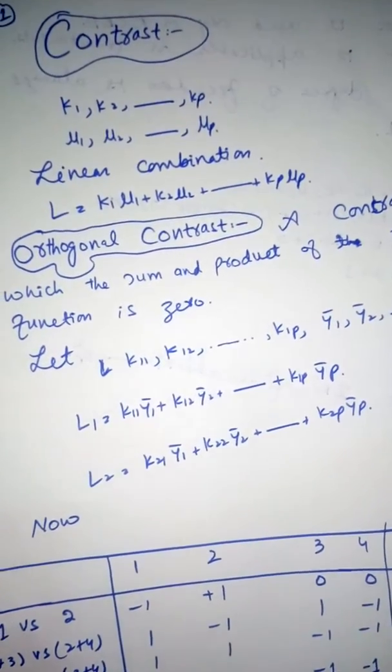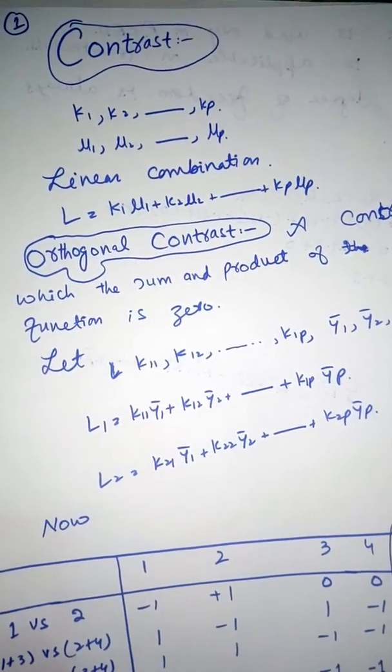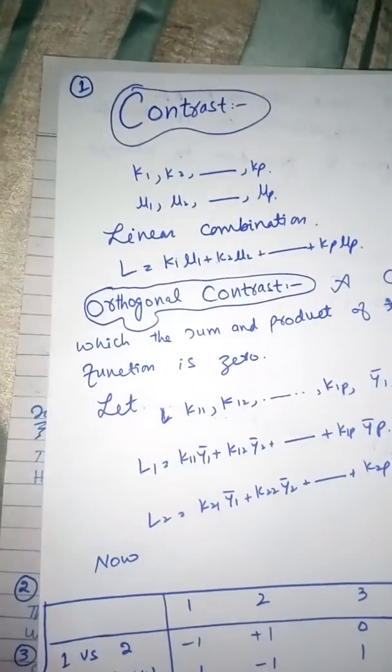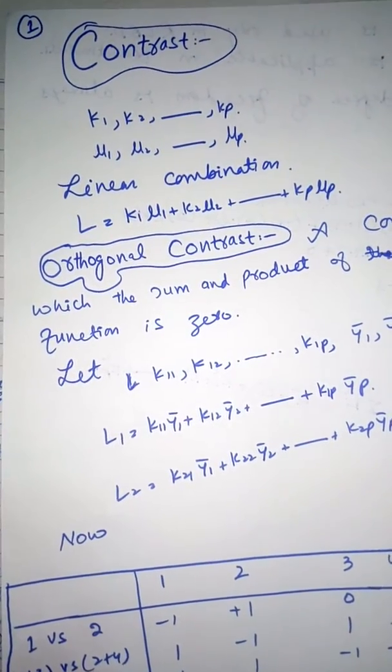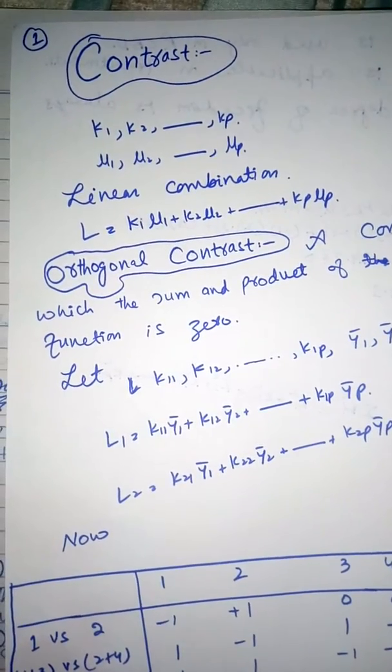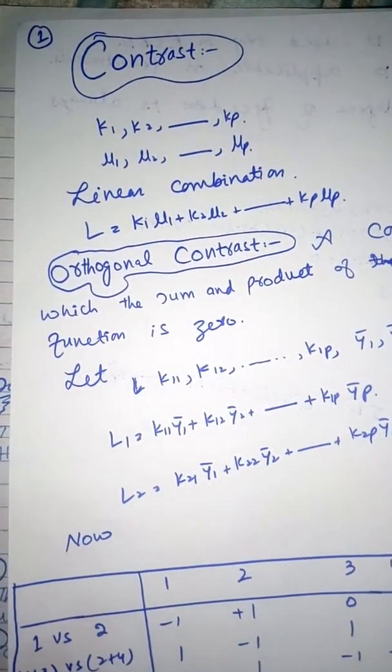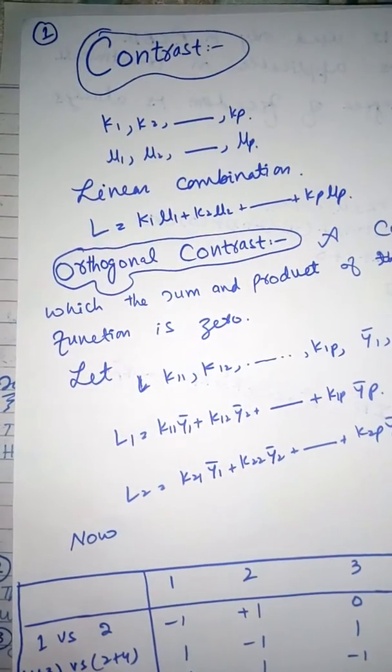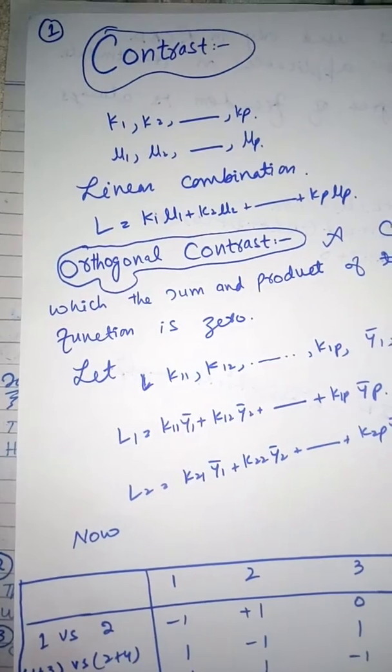Bismillahirrahmanirrahim. Experimental design - the contrast concept. What I basically discuss in experimental design is: let's say we have k1, k2 up to kp and mu1, mu2 up to mu p.